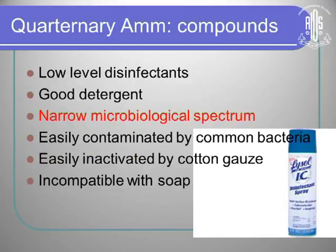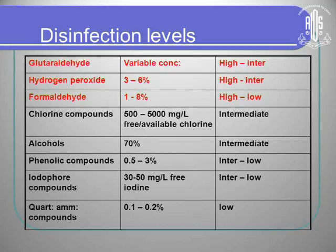Quaternary ammonium compounds are low-level disinfectants, but recently some quaternary ammonium compounds with even high-level disinfectant properties have come onto the market. Regarding disinfection levels: glutaraldehyde, hydrogen peroxide, and formaldehyde in high concentration can give high-level disinfection.